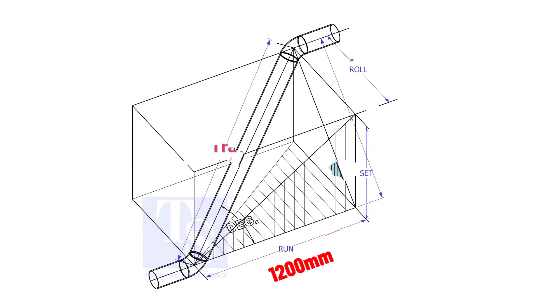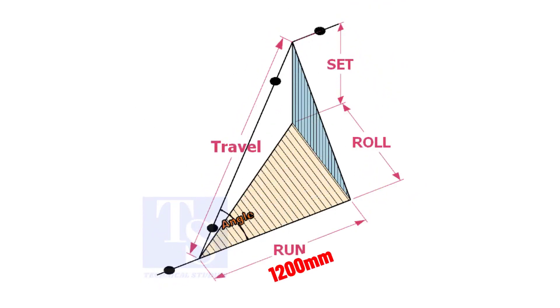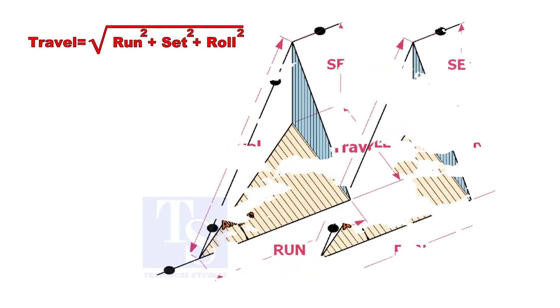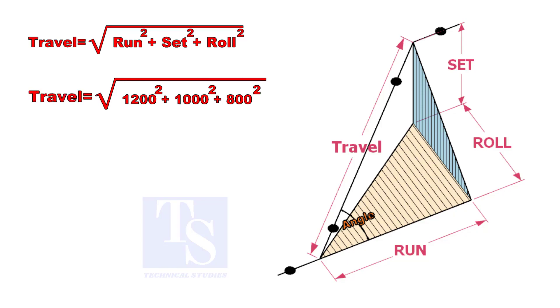Assume that the run is 1200 mm, set is 1000 mm, and the roll is 800 mm. Calculate the travel length. Let us calculate.